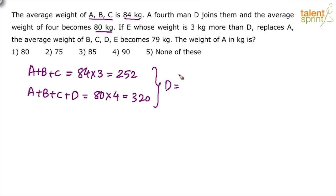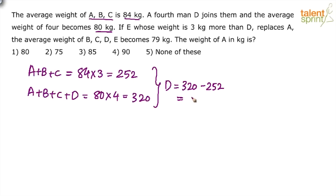Now from these two equations, we can find the weight of D. If you subtract A plus B plus C from A plus B plus C plus D, you get the weight of D. So D equals 320 minus 252, which is 68 kg.